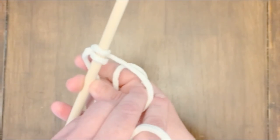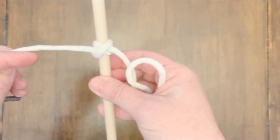You'll have an X. It'll look like that on the back. That's the modified clove hitch.